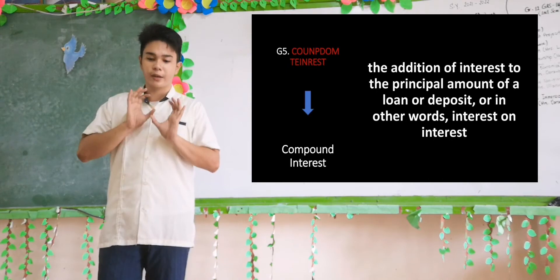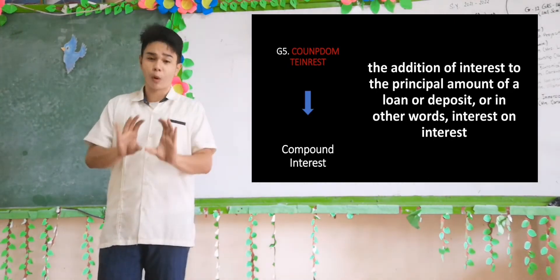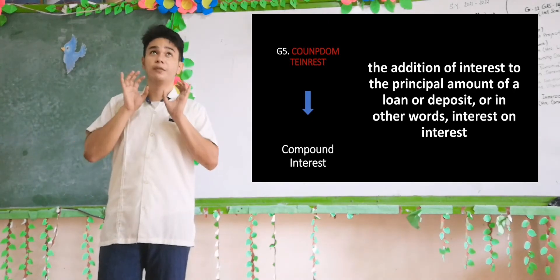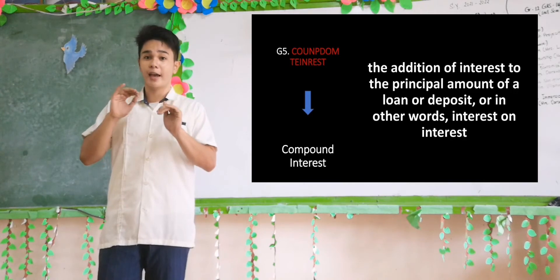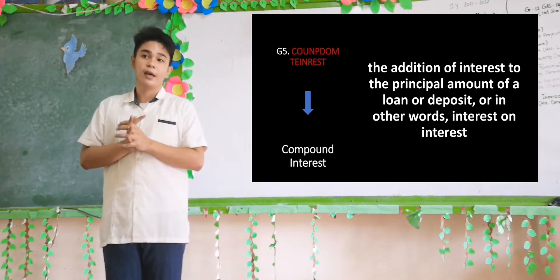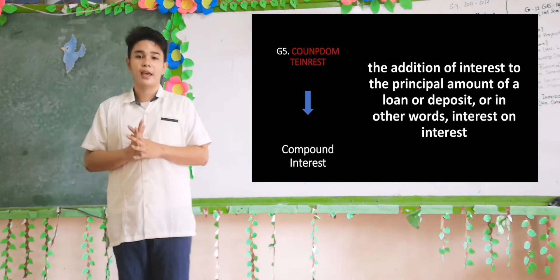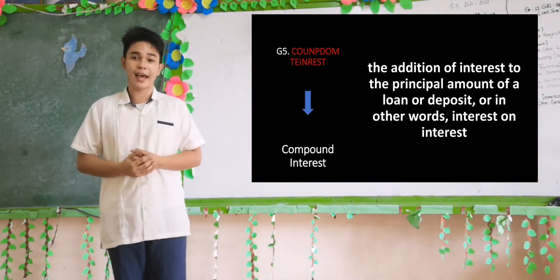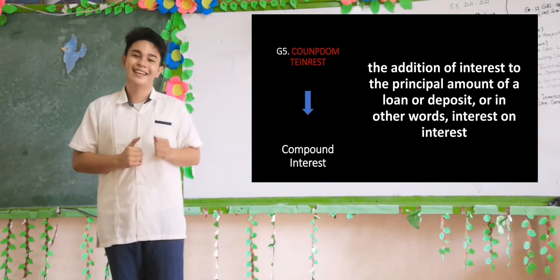For example, in January you're going to pay 250, and in February you're going to pay 260, and so on. It depends on the policy, the commitment, the interest rate, and all the terms involved. But just take note that compound interest is interest on interest.